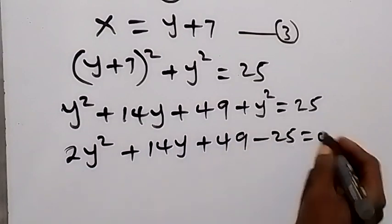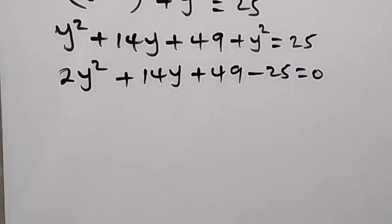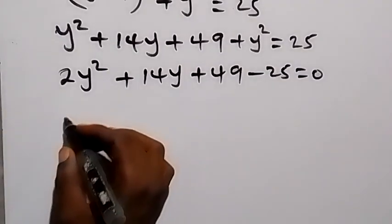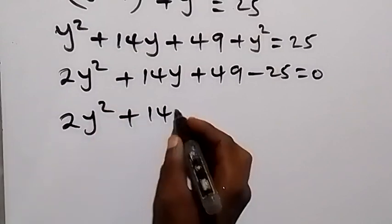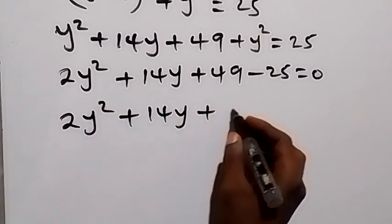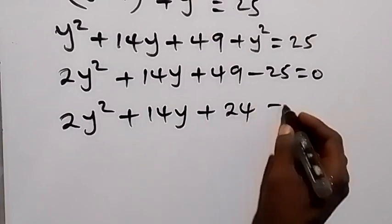When we simplify this further, this gives us 2y squared plus 14y plus 24 equals zero.